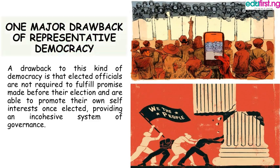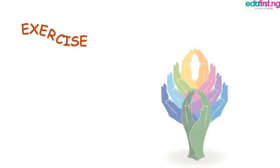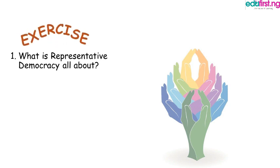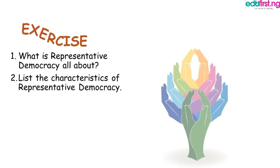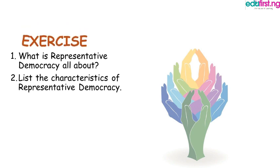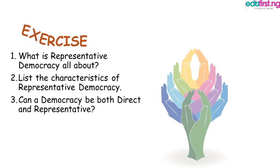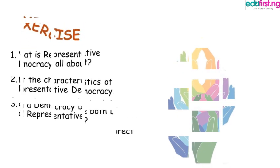Before we go, I would like to leave you with this exercise. One: what is representative democracy all about? Two: list the characteristics of representative democracy. And the last one: can a democracy be both direct and representative? Thank you very much. See you in our next class.